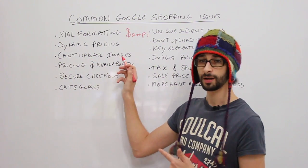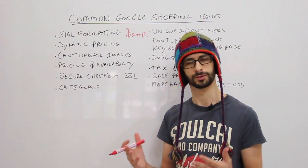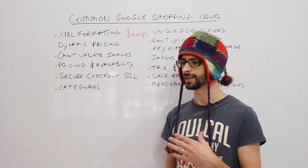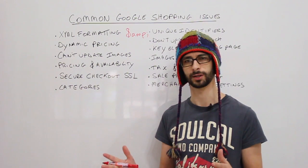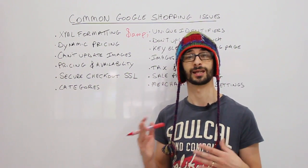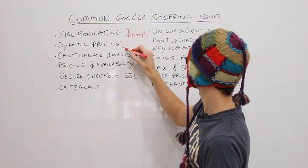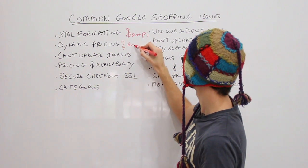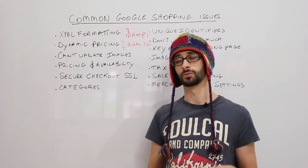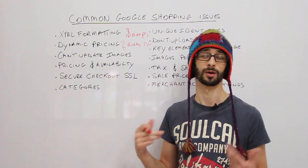What if you can't update your images? If you have already uploaded an image and cannot re-upload that same image — for example, you submitted an image for a Samsung S5 and then want a different one — the problem is that Google cannot update an image that has the same URL. To fix this, use a query string such as a question mark followed by the date, or simply rename the file. As long as the URL is completely different, Google can update the image.